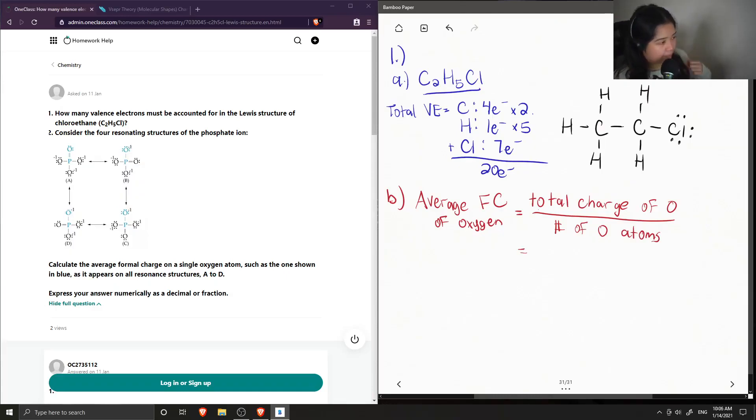So let's look at all of them. For all of the phosphate ions, the total charge of oxygen is negative three. And if we count out how many oxygen atoms are in the phosphate ion, we have four.